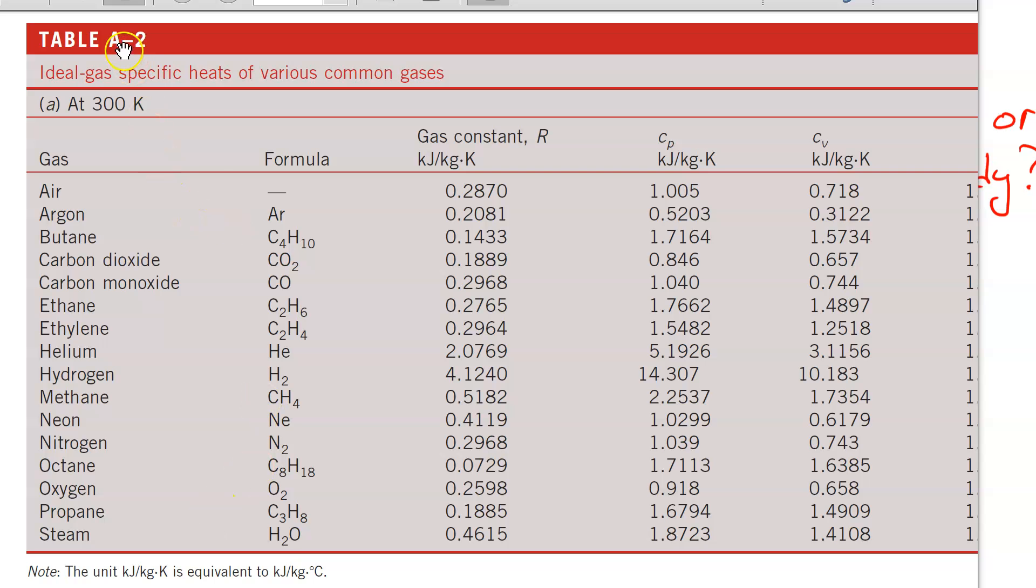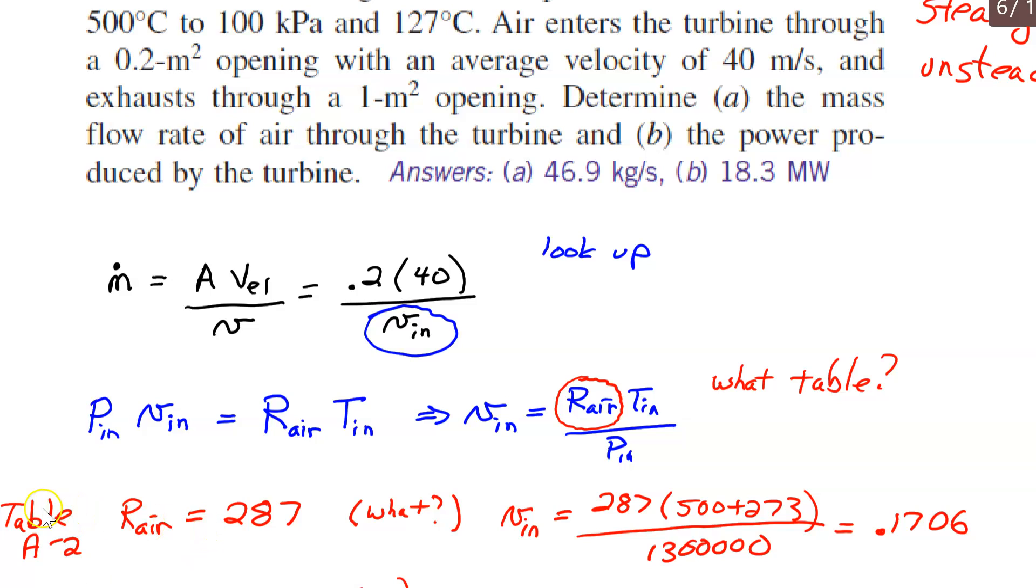Okay, I'm using table A2. The gas is air. The gas constant is 0.2870. Watch the units on this. Make sure that you get the right number. Okay, give it some thought. Okay, so if you notice it's table A2. The r for air is 287.